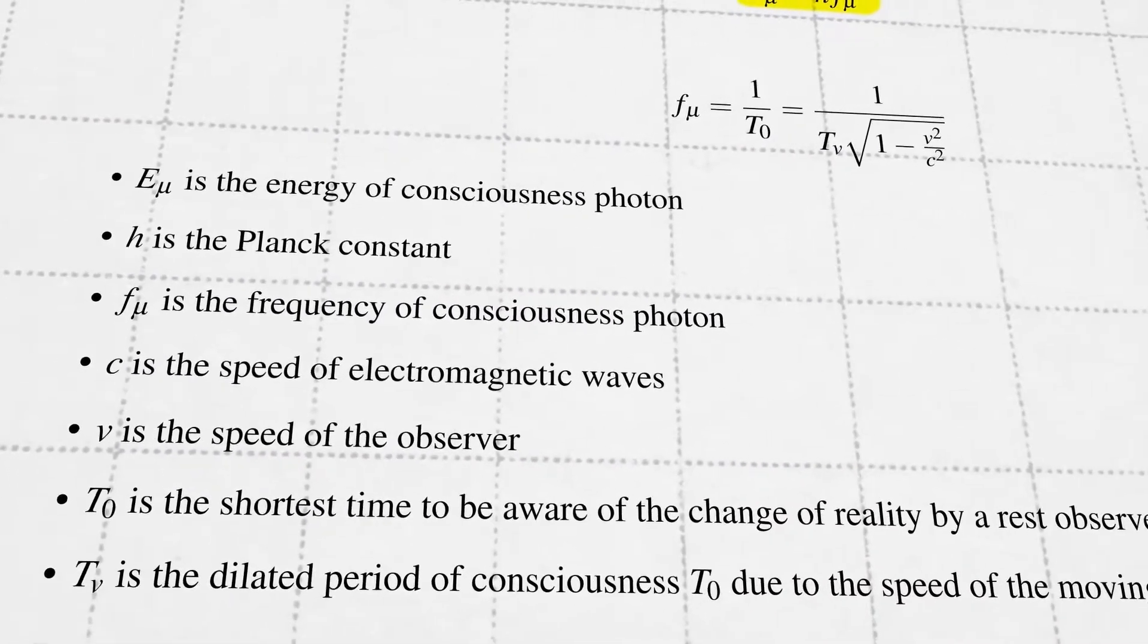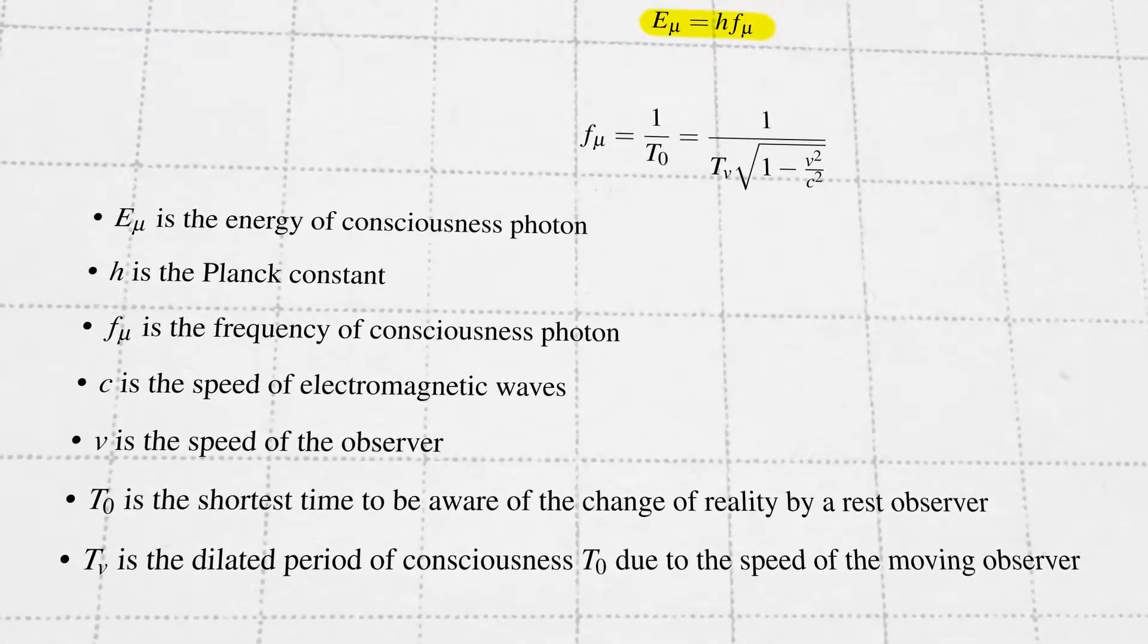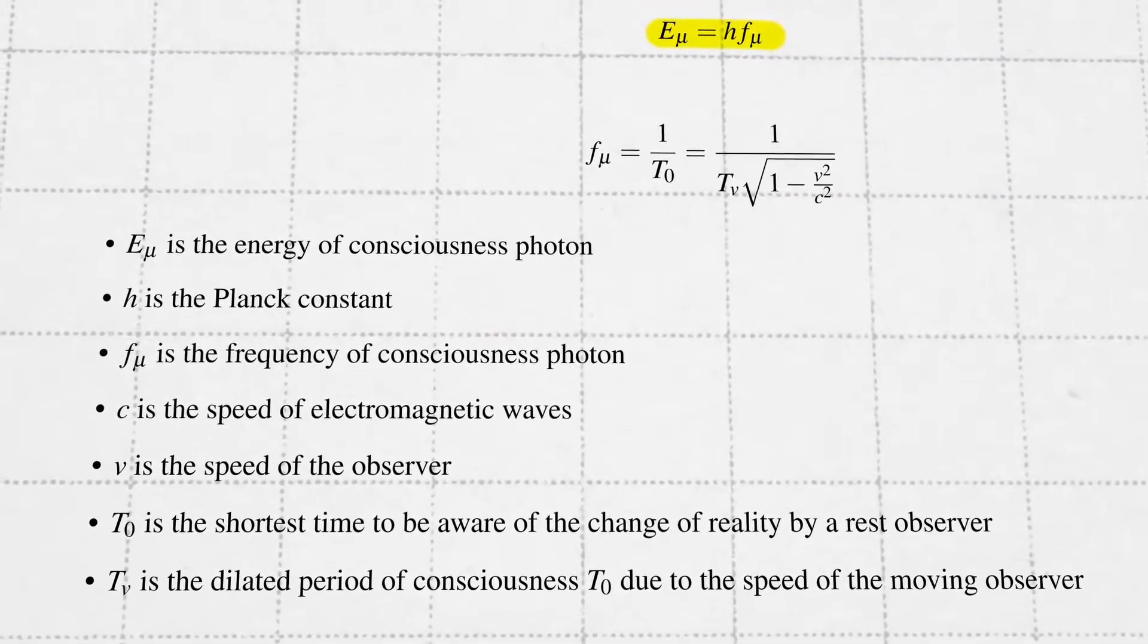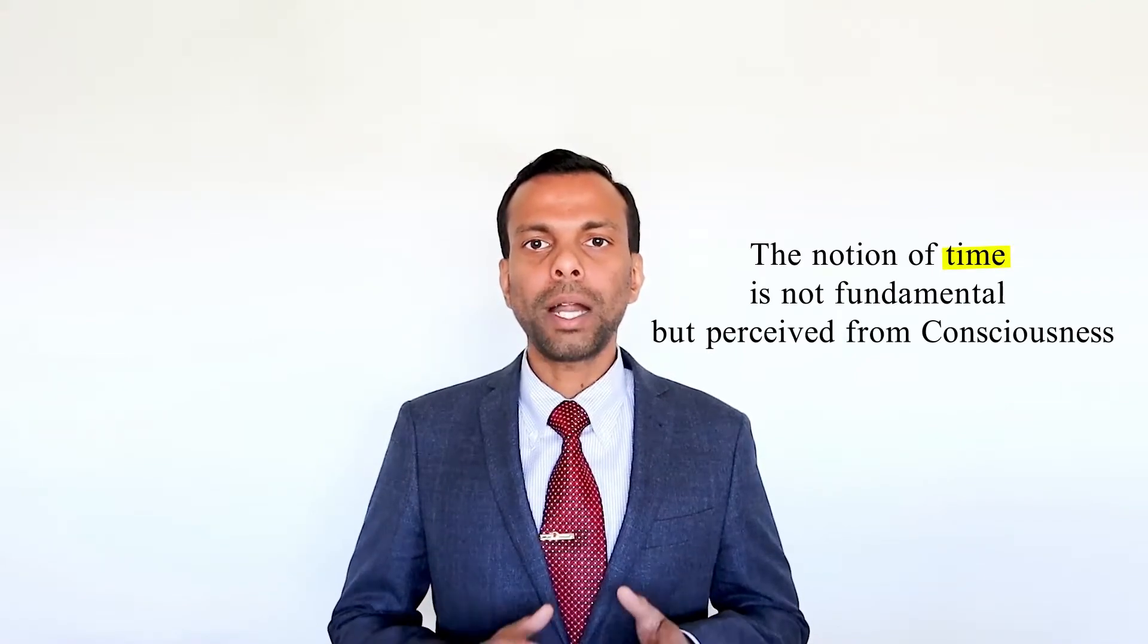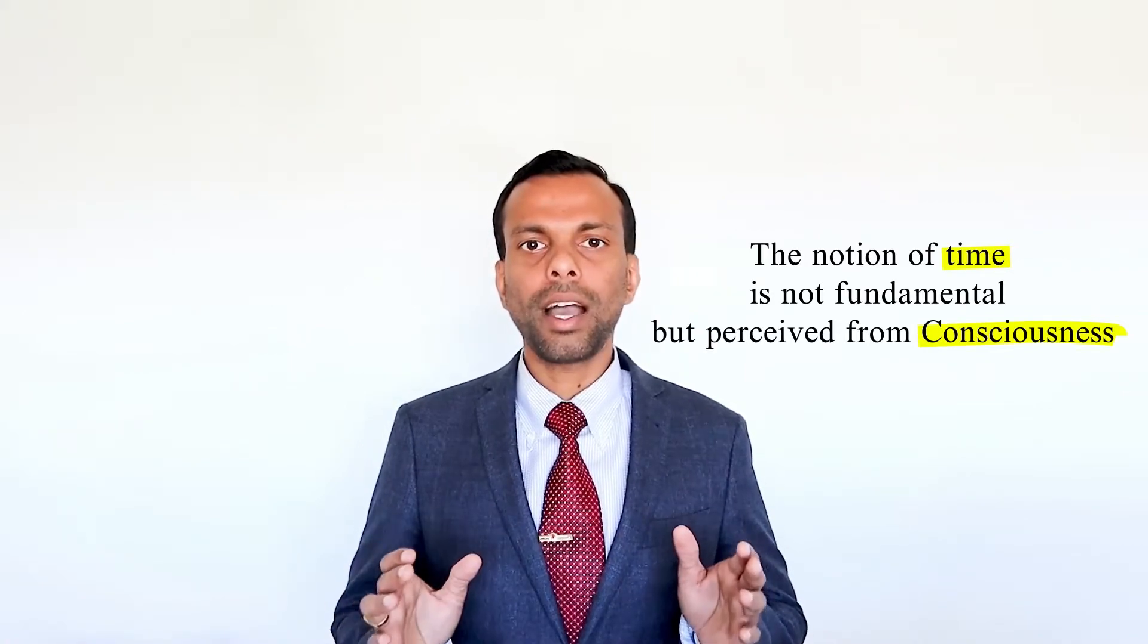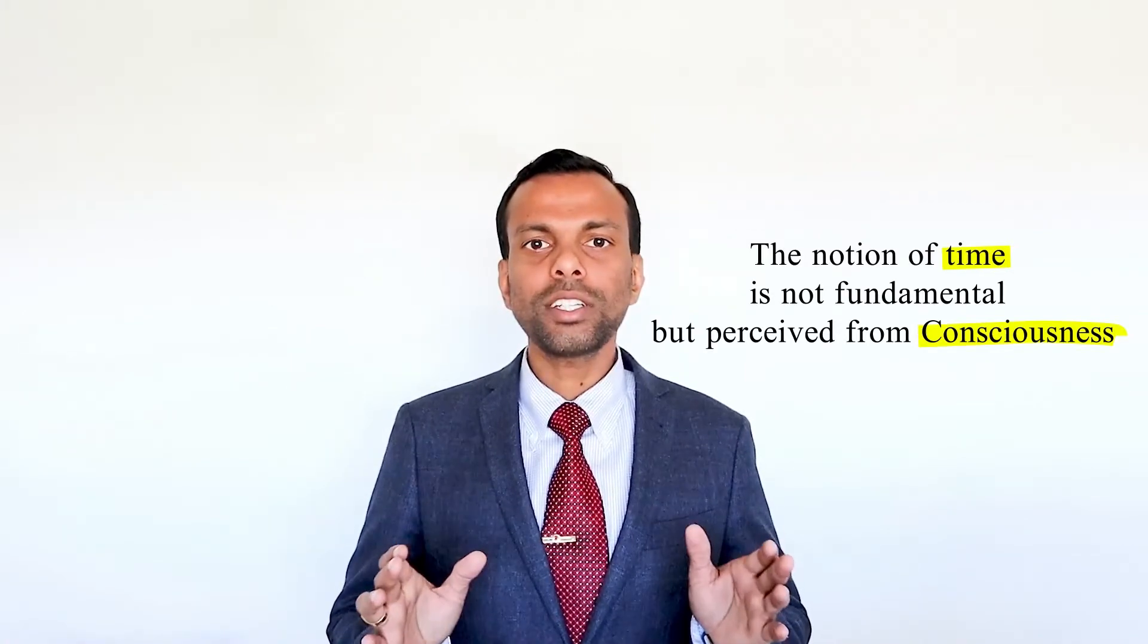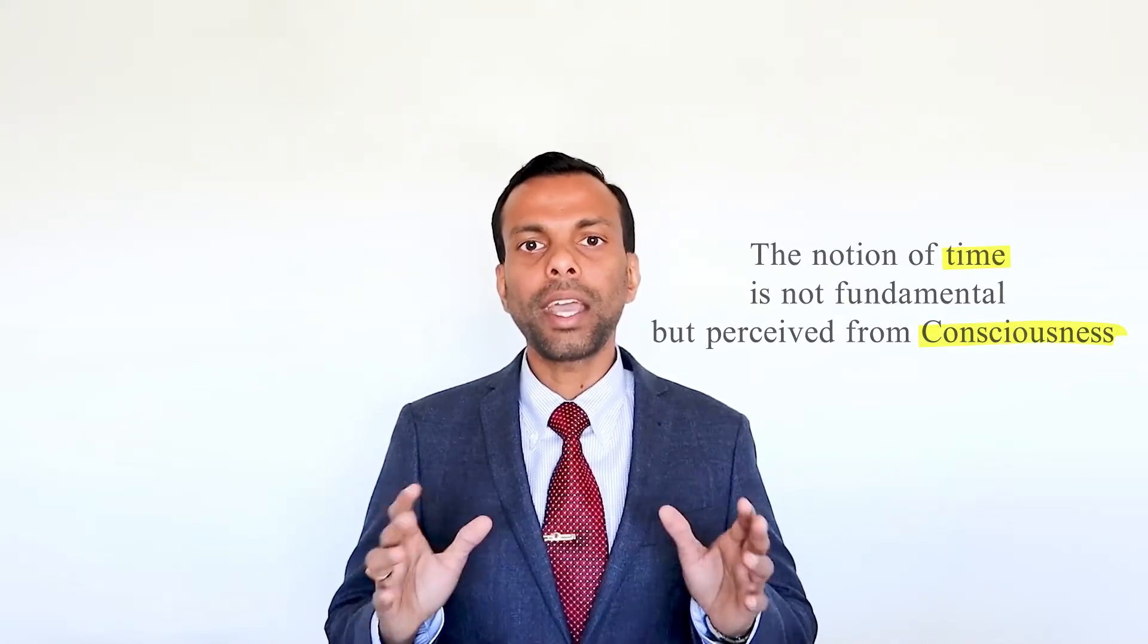We map the sequential process of awareness into the frequency of the Planck relation, which we call the frequency of consciousness. This way, the notion of time related to frequency is not fundamental but perceived from consciousness. A single cycle of the frequency means the shortest time to be aware or conscious of the change of reality by an observer.